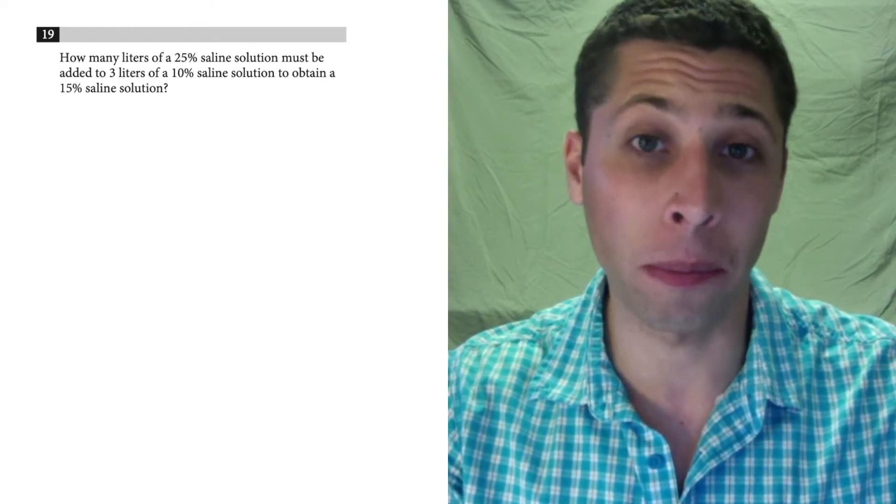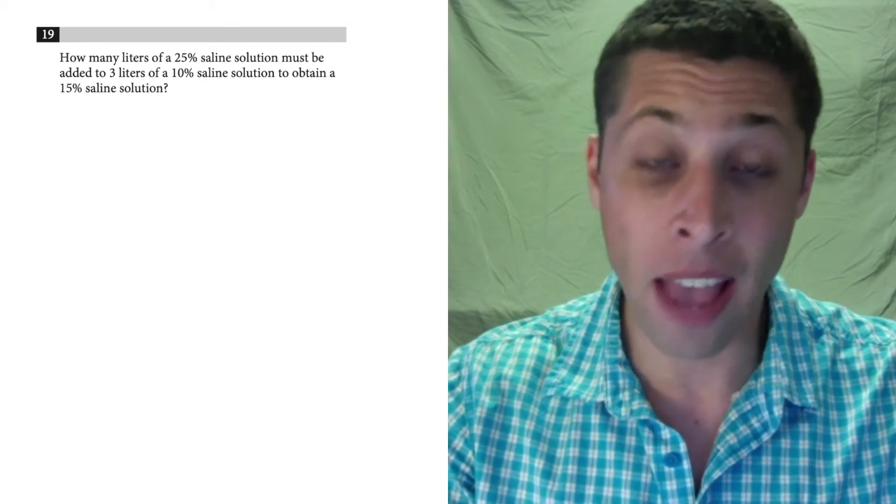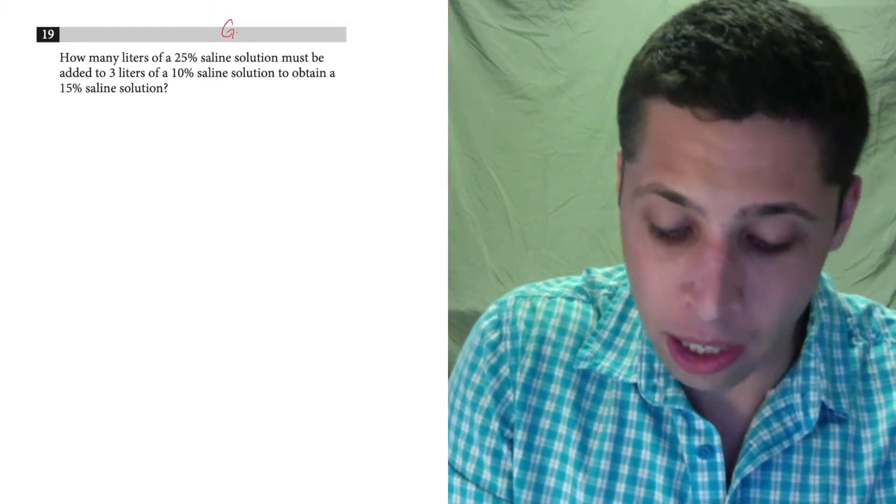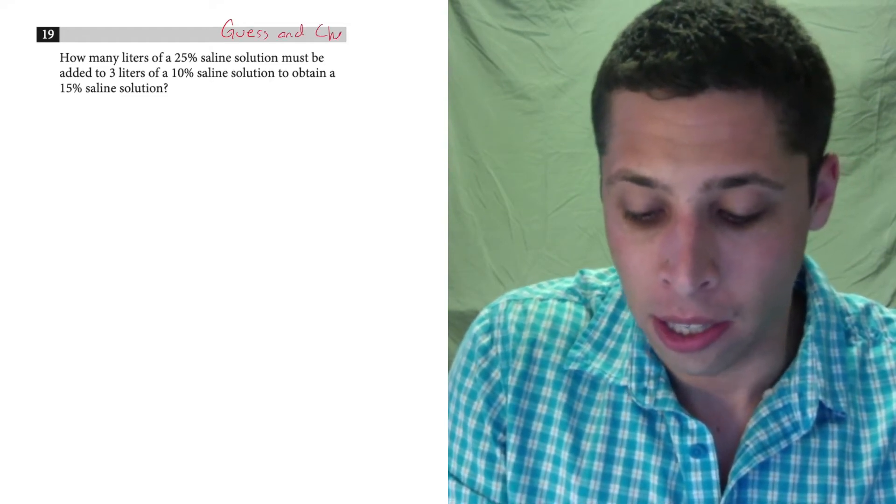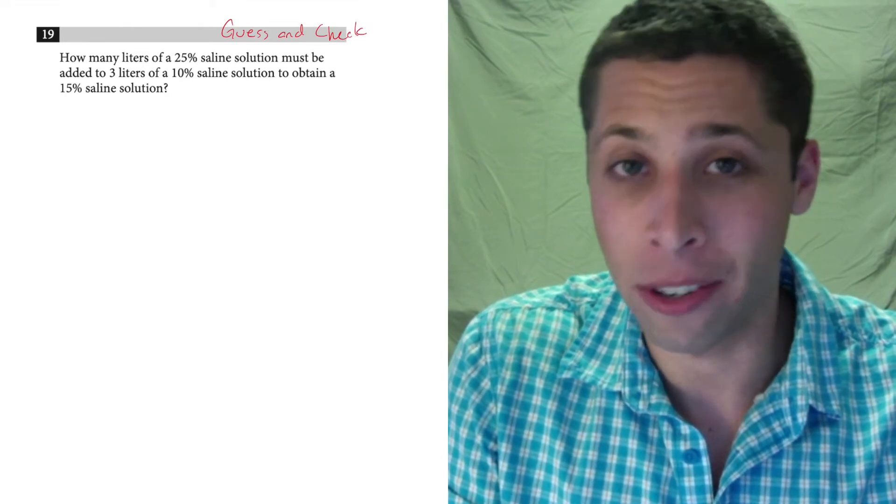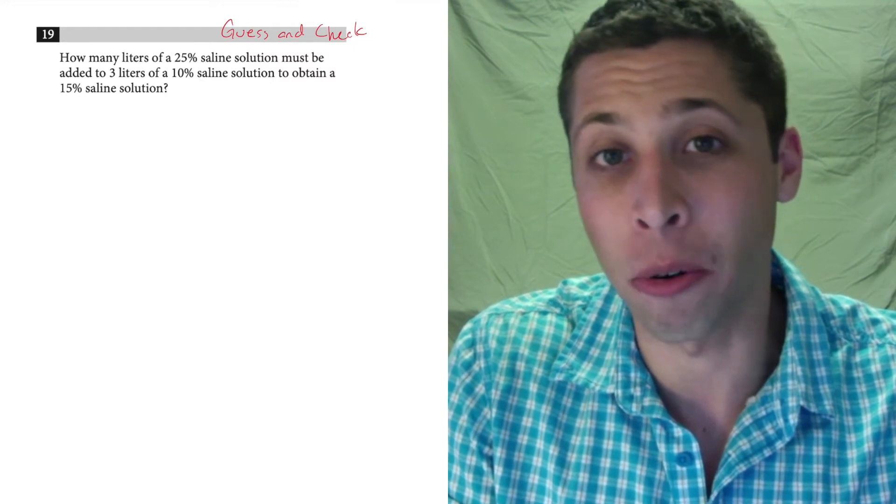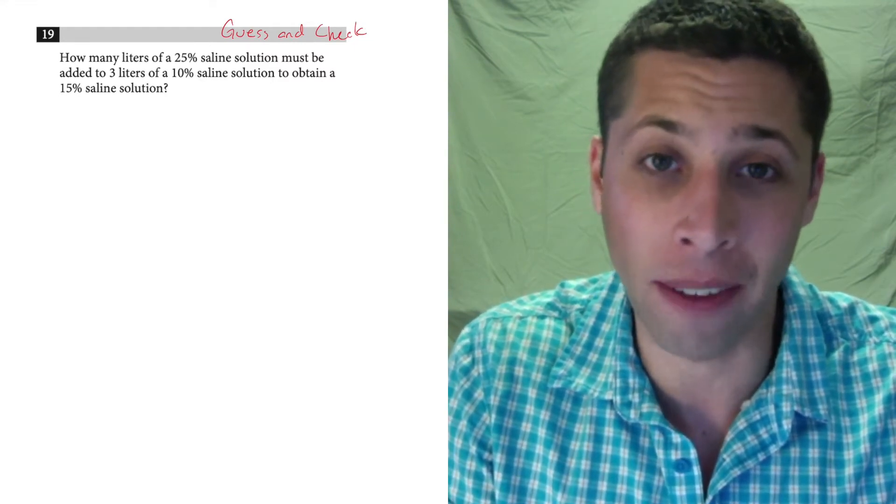And this one is especially annoying because there's really no shortcut, at least none that I've ever been able to find. If this were a multiple choice question, I would love to be able to guess and check. That would be awesome. But we don't have choices, so we can't do that. So we kind of just have to do this the long way.